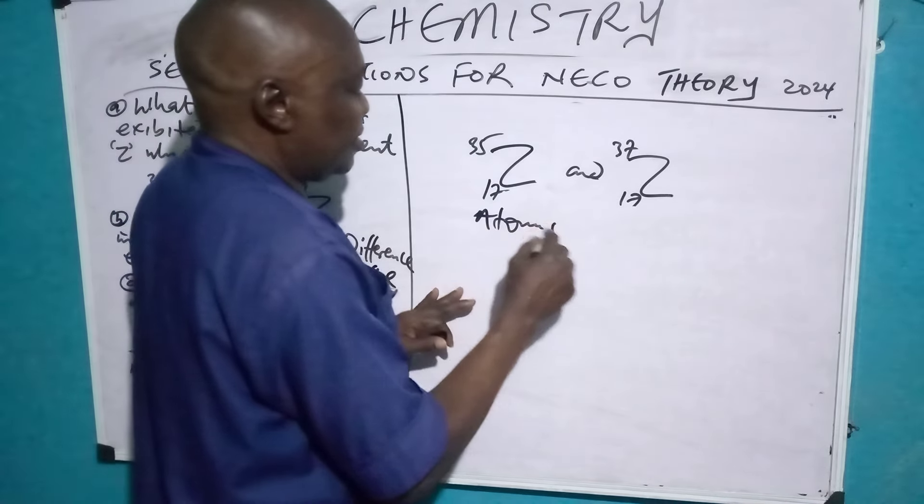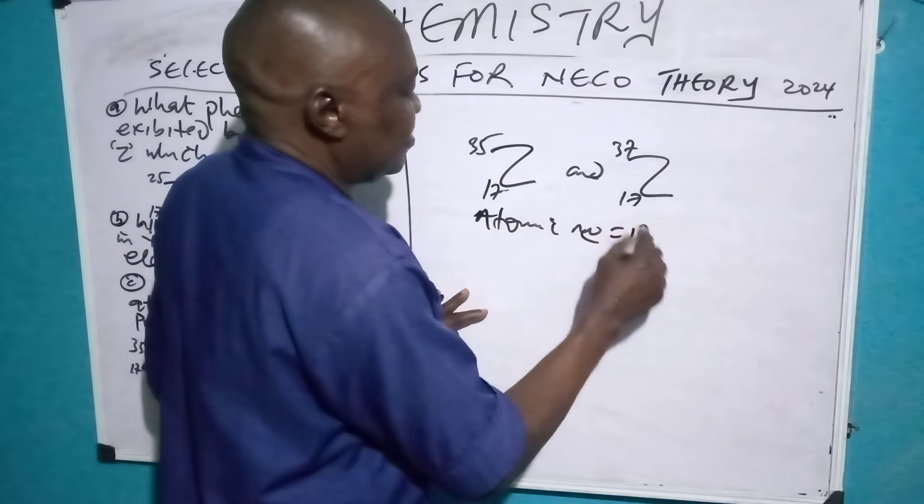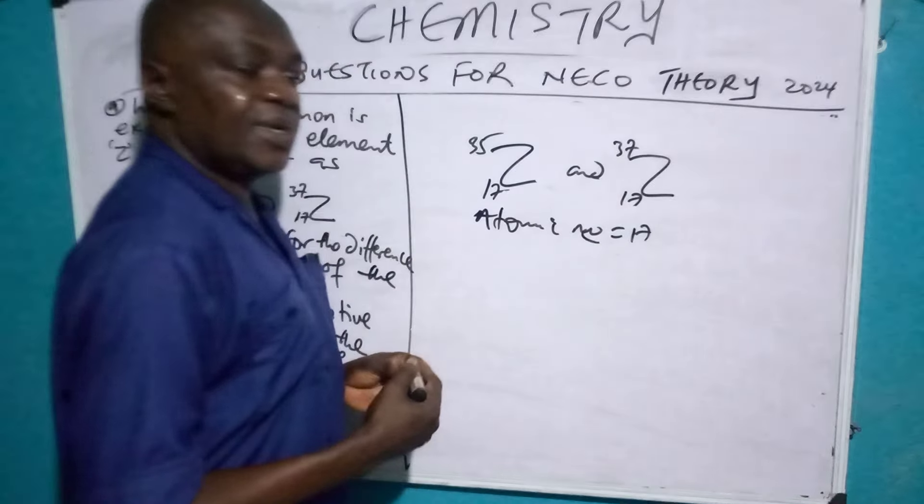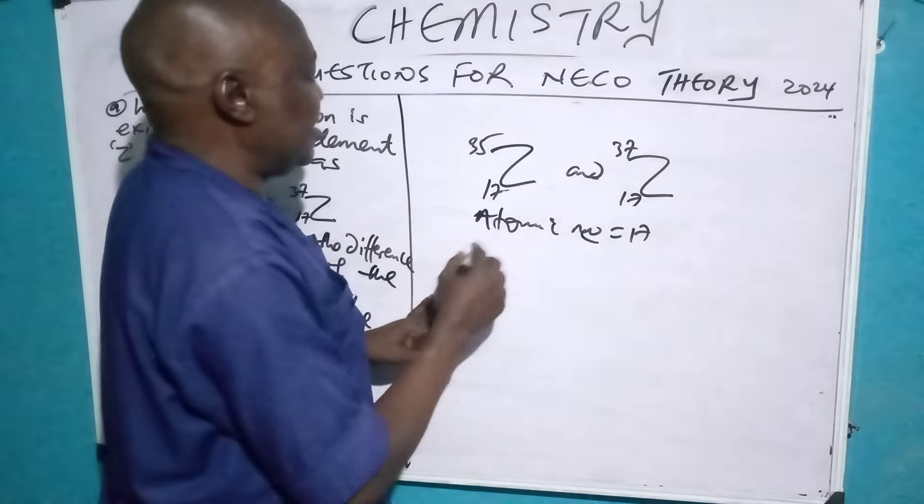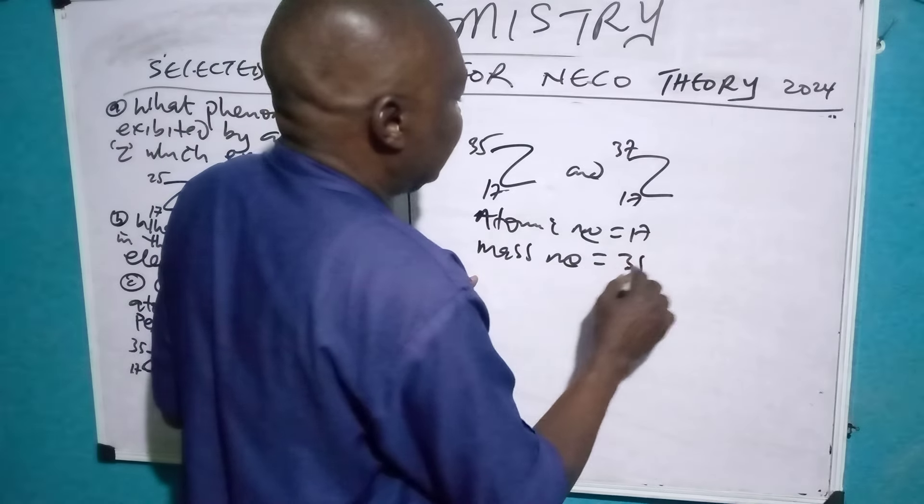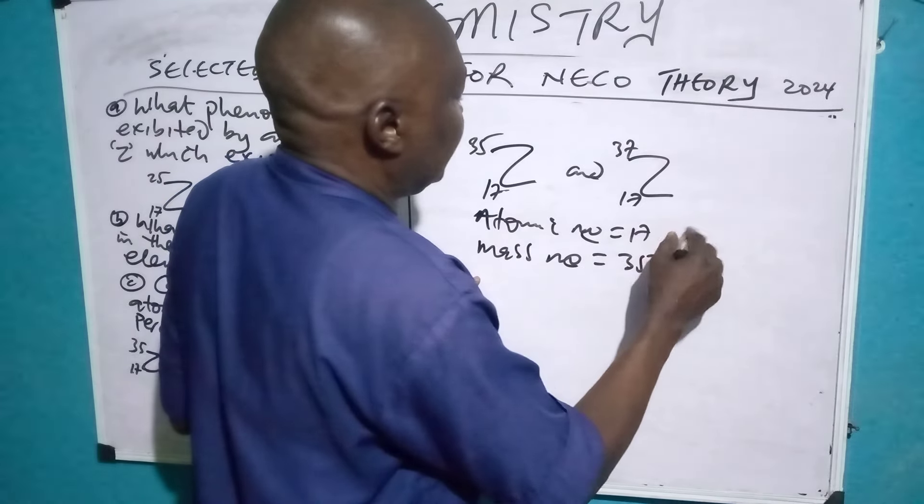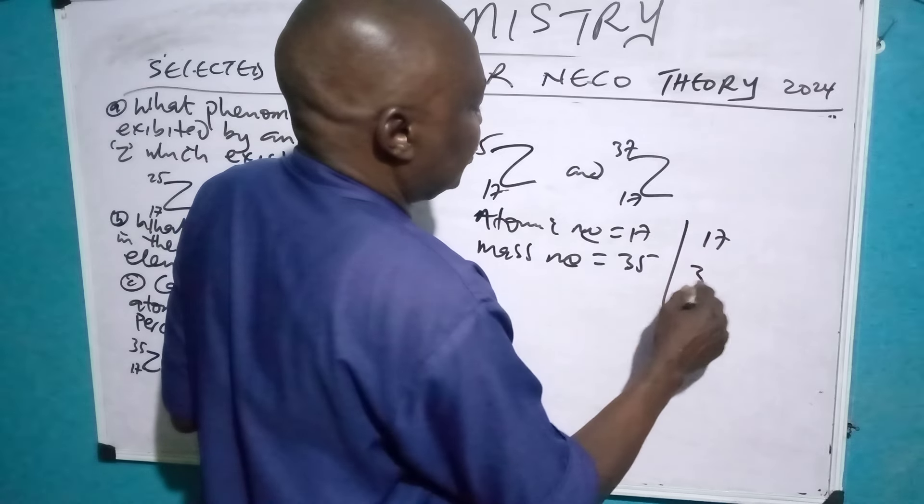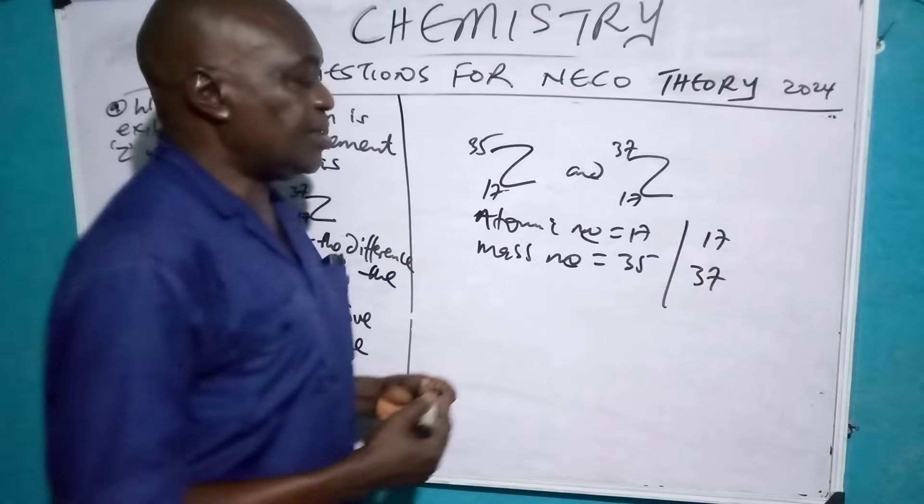Atomic number 17 for both of them. You can see it. But this one here is the mass number 35. Then this other one is 17, 37. You can see it.